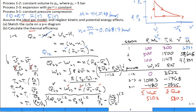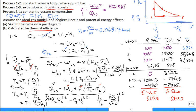Thermal efficiency = W_net / Q_in. The net work is 520.3 kJ. Heat input only occurs during process 1→2, so Q_in = 3,522 kJ. Thermal efficiency = 520.3 / 3,522 = 14.8%. Not a very efficient cycle, but that's the result. Thank you for your attention — see you Wednesday morning.